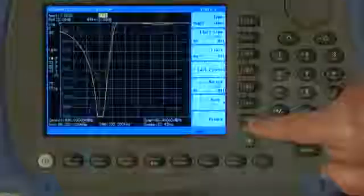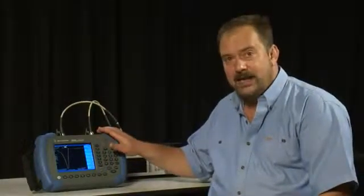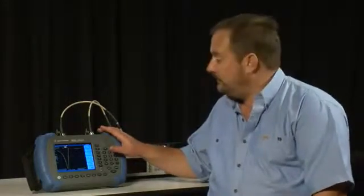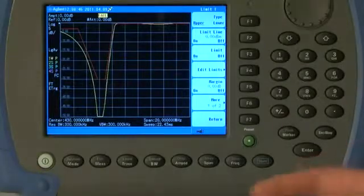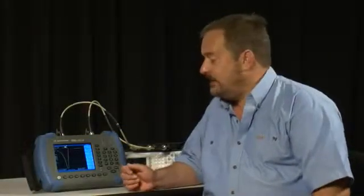We can save that limit line file into the internal memory of the analyzer or onto a USB memory stick and then recall it at any time in the future and always make sure that we are therefore testing these filters, or it could be an antenna, cable or even the modulation characteristics of a transmitter. Make sure we are testing them all the same way every time.